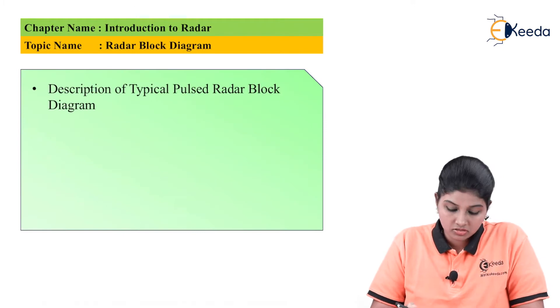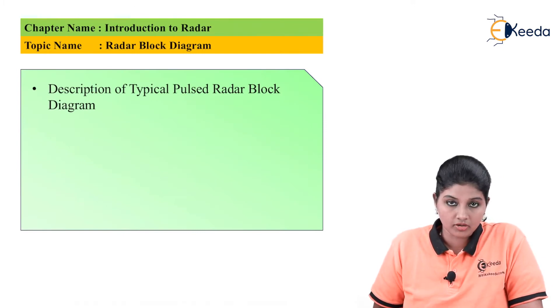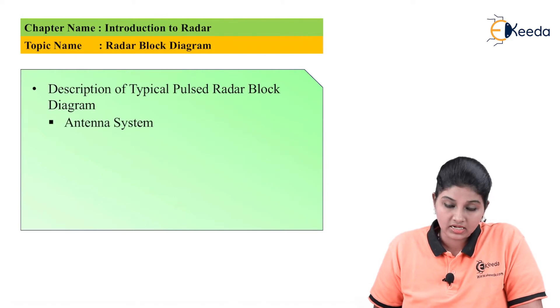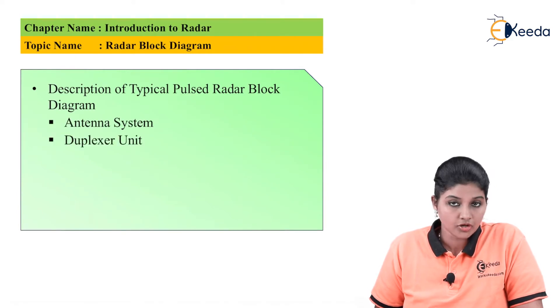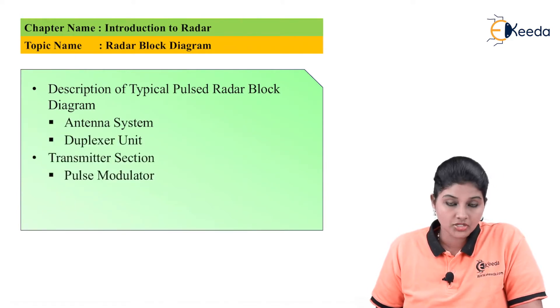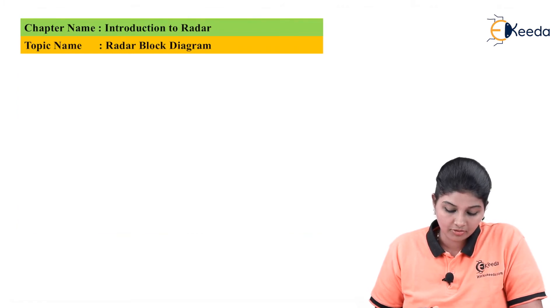The first topic is the description of a typical pulse radar block diagram, which includes the antenna system, diplexor unit, transmitter section, pulse modulator, waveform generator, and power amplifier.